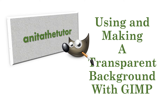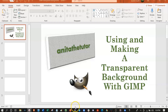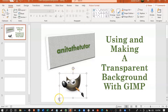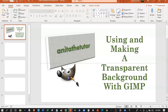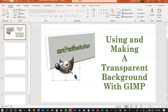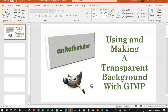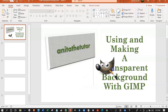Shalom everybody. I'm going to show you how to use and make a transparent background with GIMP. Usually when you're dealing with an image it's a square or rectangle — wouldn't it be nice if you could move it around without having to look at the background? You can find a lot of transparent background images on the internet, or if you're comfortable with it you can make your own with GIMP.